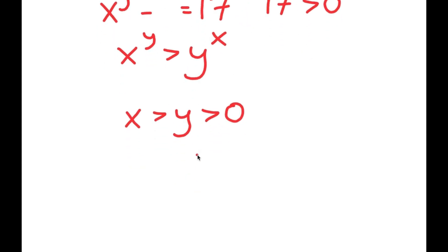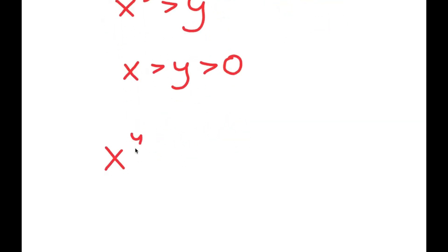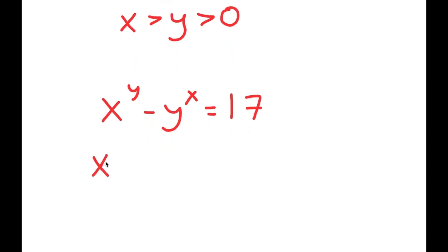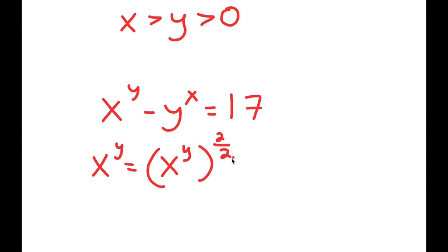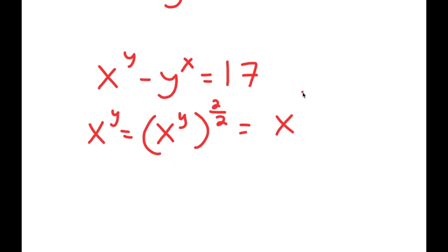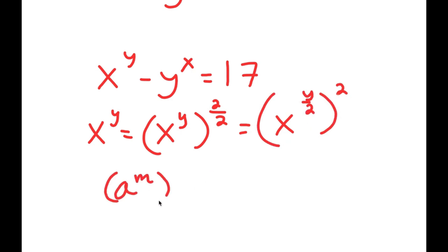So now that we know this, I'm going to rewrite my equation: x to the power of y minus y to the power of x is equal to 17. And x to the power of y, I can rewrite this as x to the power of y to the power of 2 over 2, because 2 over 2 is the same thing as 1. This I can rewrite as x to the power of y over 2 to the power of 2, because if I have something in the form a to the power of m to the power of n, this is the same thing as a to the power of m times n.